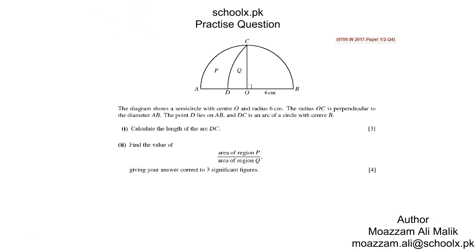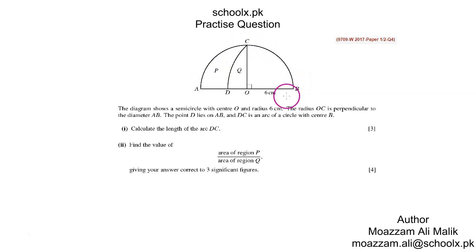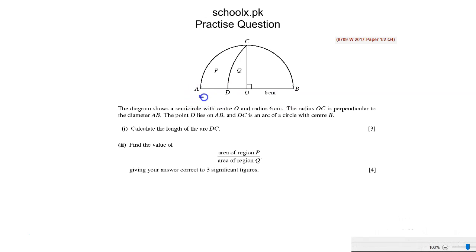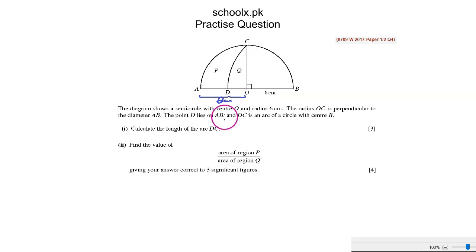In this question, the diagram shows a semicircle with center O. This is semicircle AOBC with center O and radius 6 centimeters. If OB is 6 centimeters then AO is also 6 centimeters. The radius OC is perpendicular to the diameter AB. Point D lies on AB, and DC is an arc of a semicircle with center B.